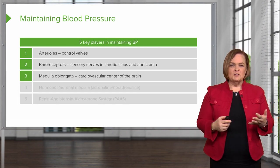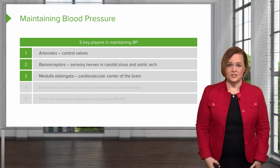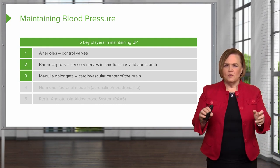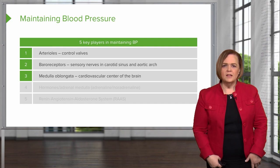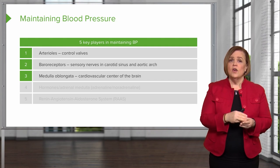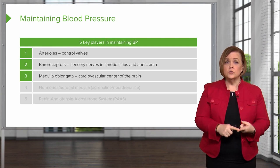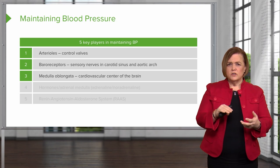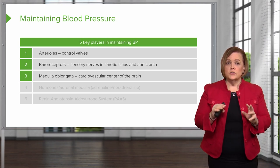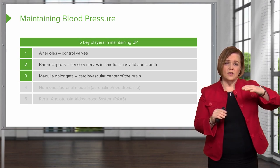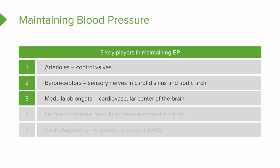The medulla oblongata — it's the cardiovascular center of your brain. So we've now hit three of the five key players: the arterioles as the major control valves, the baroreceptors as those sensory nerves in the carotid sinus and aortic arch that can reset themselves, and the medulla oblongata, the cardiovascular center of the brain.